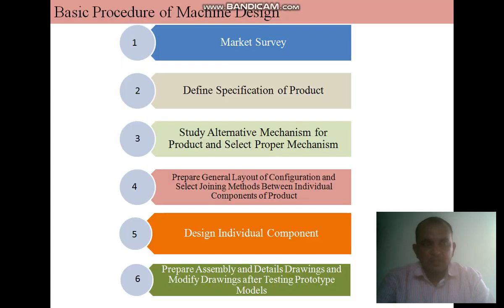In this session, we are going to discuss the basic process of machine design. The basic process of machine design consists of step-by-step approaches from given specifications about the final requirement of the products to the complete descriptions in the form of drawings of the final products. We have identified six basic steps present in machine design.